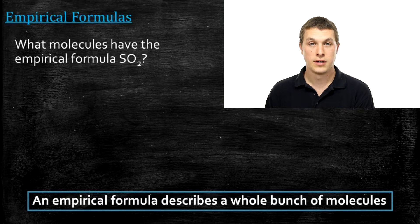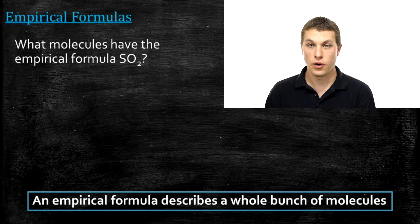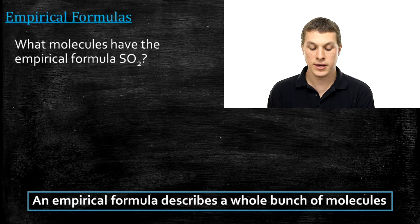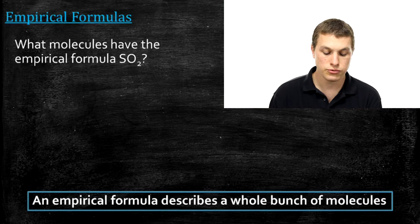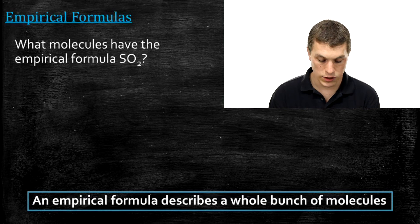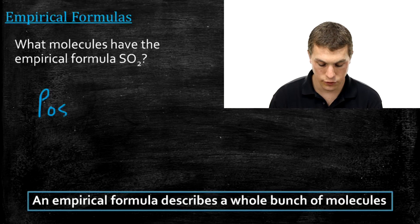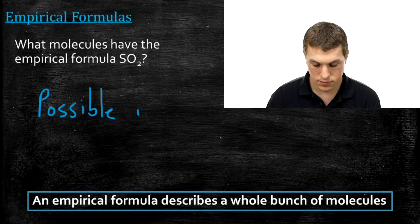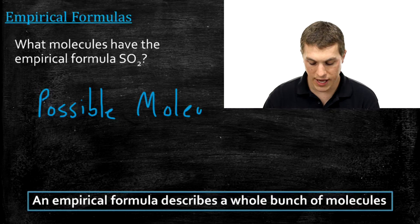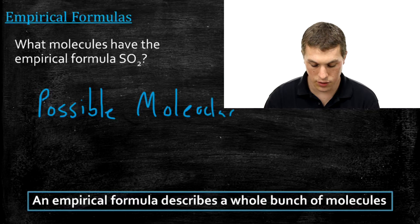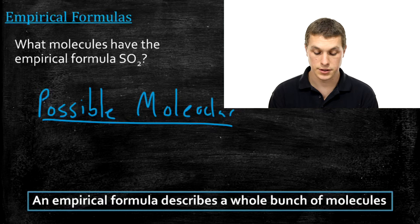The key thing to understand is that if I give you an empirical formula, I'm really just telling you the ratio of the elements in that compound, but I'm not telling you exactly how many there are. For example, if I have the empirical formula SO2, that's telling me that for every one sulfur there are two oxygens. But there's a huge range of molecular formulas that could correspond to that — all possible molecular formulas must have the same ratio of sulfur to oxygen.